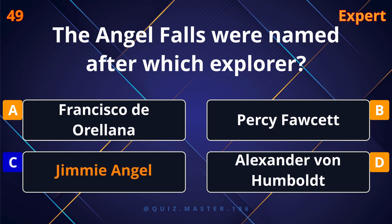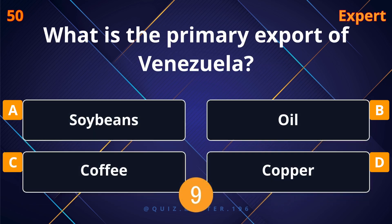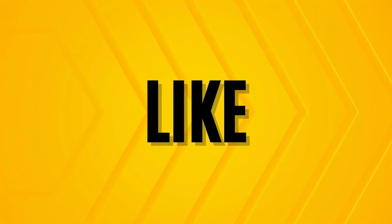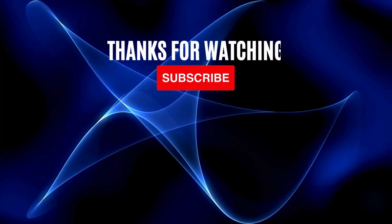What unique wildlife is found only in the Galapagos Islands? Galapagos tortoises. The Angel Falls were named after which explorer? Jimmy Angel. What is the primary export of Venezuela? Oil. Thanks for watching — don't forget to like, comment, and subscribe.